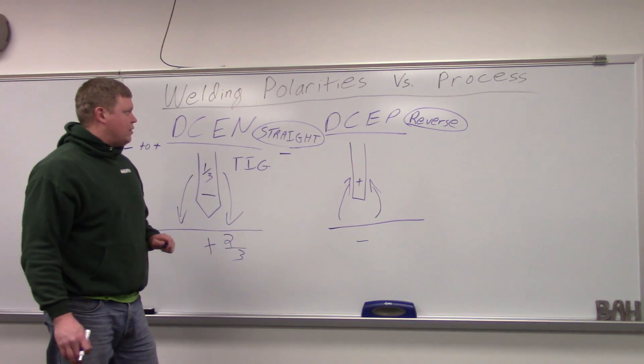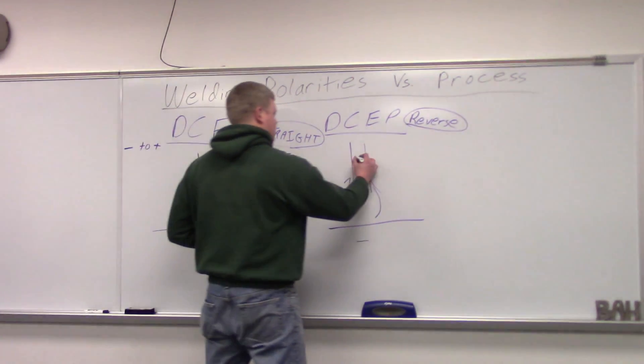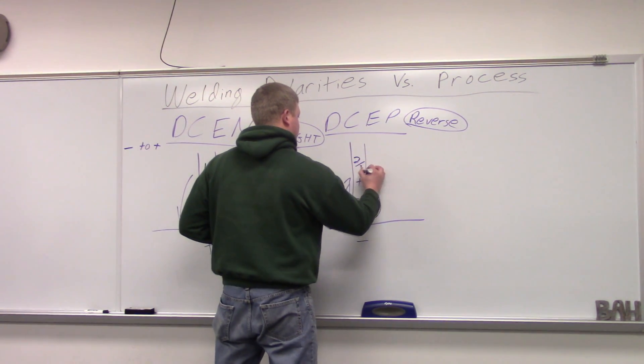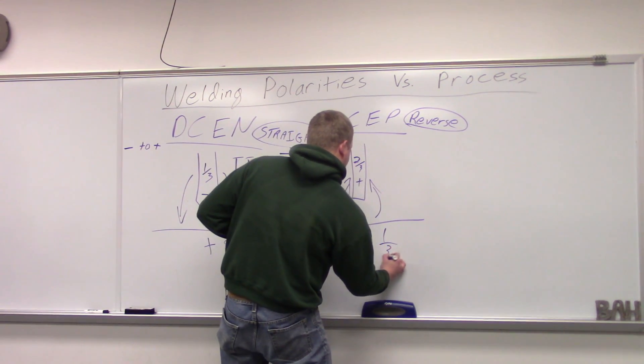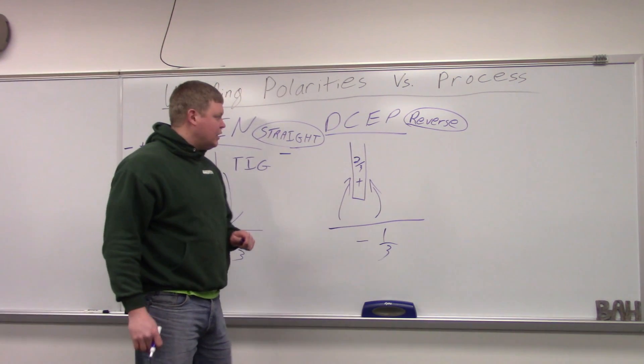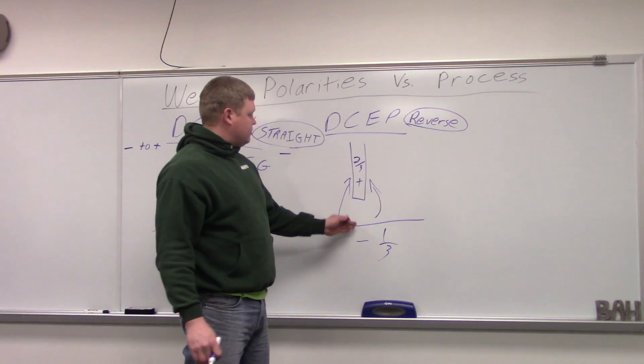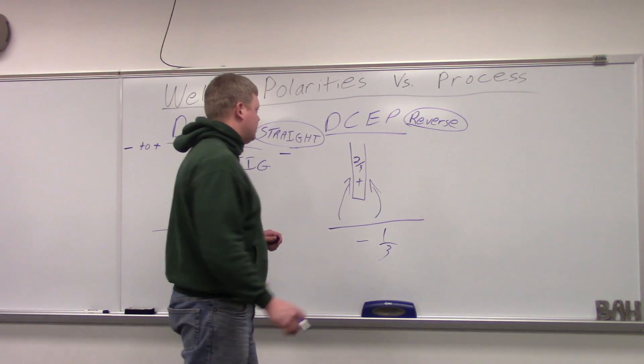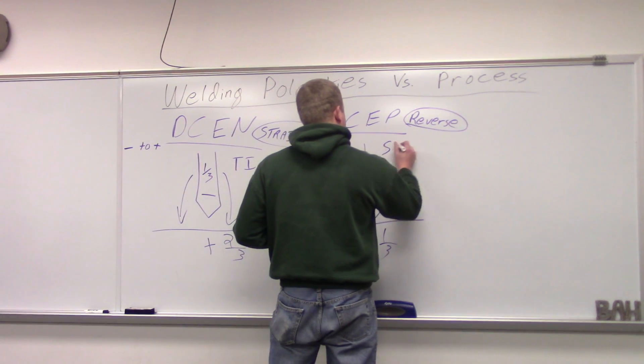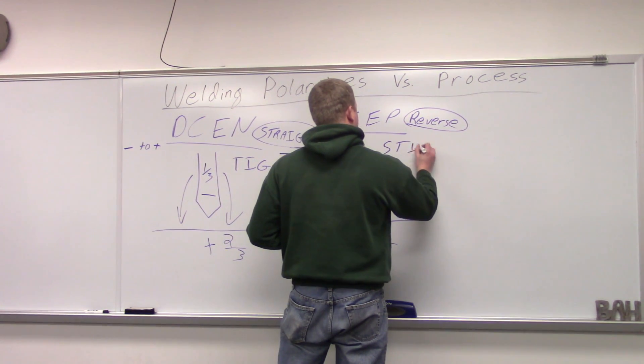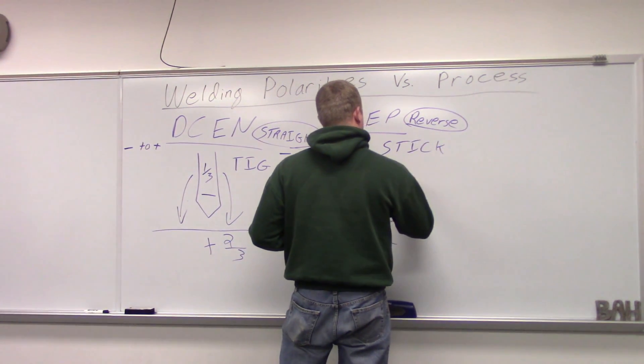The heating on your direct current electrode positive is going to be two-thirds up here, one-third down here, the opposite of the direct current electrode negative. That's why you use it for stick welding. It goes up and eats away at your rod. So we're going to put a stick here.